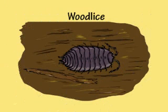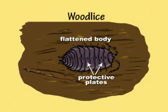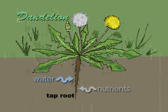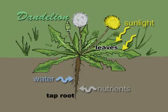Wood lice have flattened bodies so they can get under stones and wood, and protective plates covering their bodies to stop them drying out or being crushed. And dandelions have long tap roots to anchor them in the soil and absorb nutrients and water, and leaves that spread out to catch the sunlight.